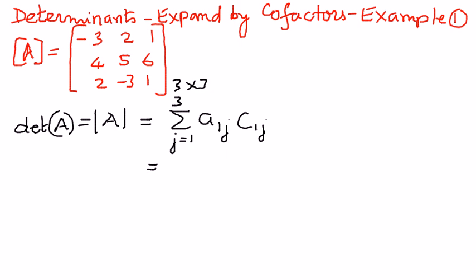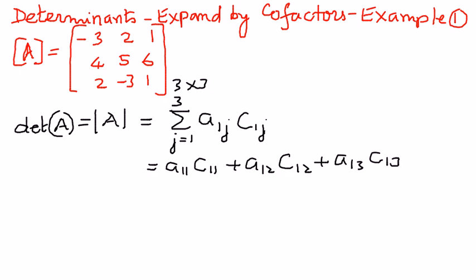Expanding that gives us A11·C11 plus A12·C12 plus A13·C13. We already know what A11, A12, and A13 are — those are negative 3, 2, and 1 respectively. So we need to now find the values of C11, C12, and C13.